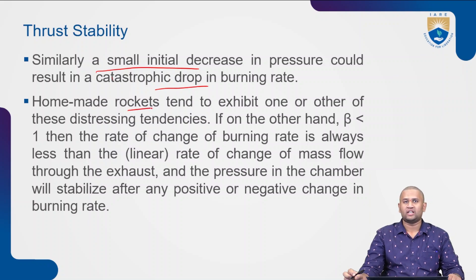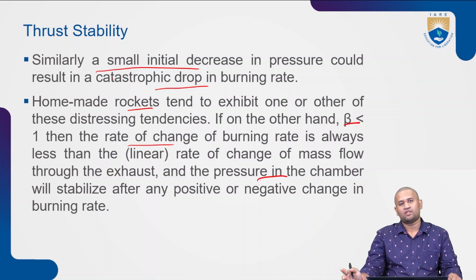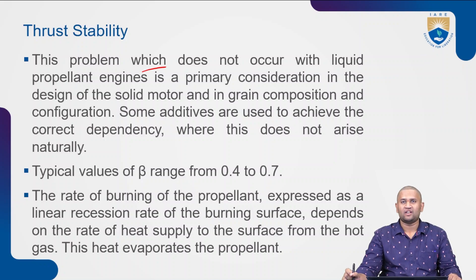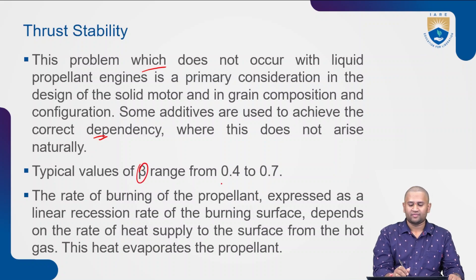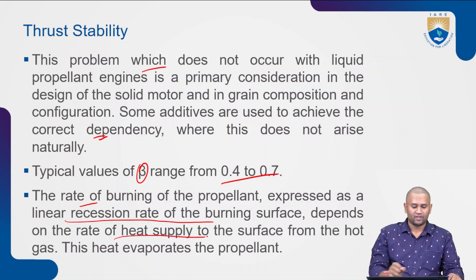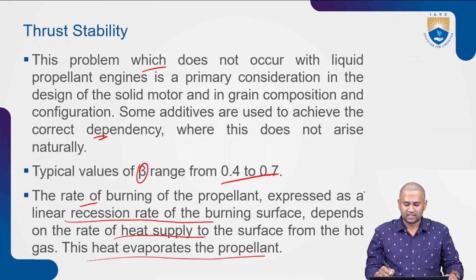Double-base propellants tend to exhibit one or the other of these distressing tendencies. If beta is less than 1, the rate of change of burning rate is always less than the linear rate of change of mass flow rate through the exhaust, and the pressure in the combustion chamber will stabilize any positive or negative change. This problem does not occur with liquid propellants. It is a primary consideration in the design of solid motors and grain composition. Some additives are used to achieve this correct pressure dependency where it does not arise naturally. Typical values of beta range from 0.4 to 0.7. The rate of burning is expressed as a linear recessional rate of the burning surface, which depends on the rate of heat supply to the surface from the hot gas.